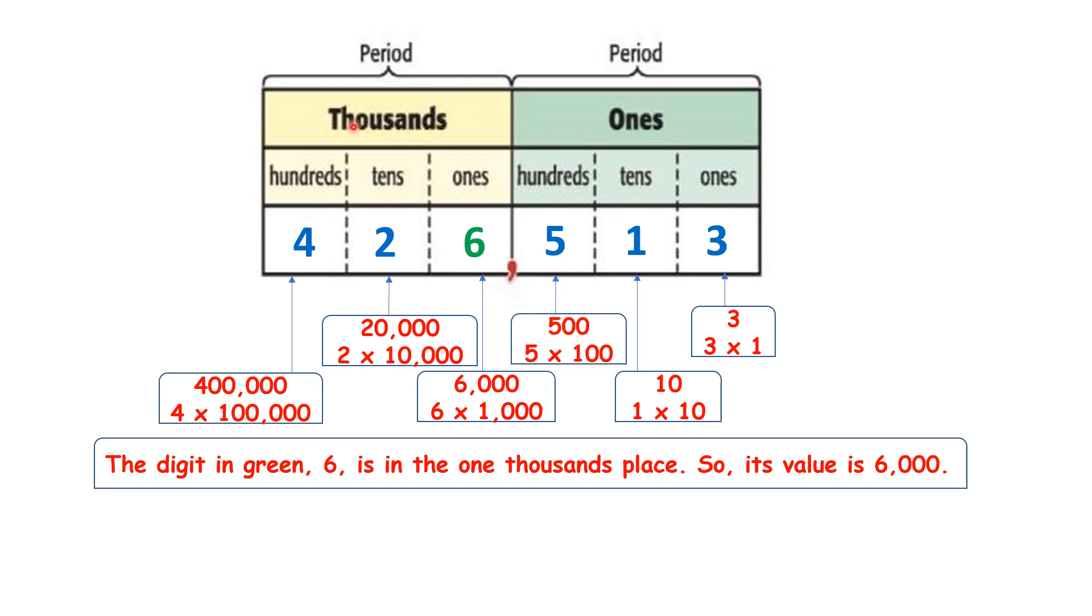Now let's move to the thousands period which are also divided into ones, tens, and hundreds. The 6, which is in green, is in the thousands place and the 1,000 place. So its value is 6,000.